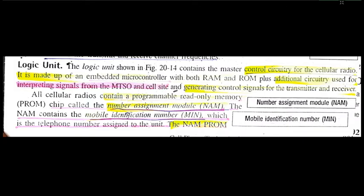The next portion is the logic unit. The logic unit basically contains the master control of the entire cellular radio or entire cell phone. You can say it is the heart of the cell phone. It is made up of a microcontroller with RAM and ROM together, plus additional circuitry which interprets signals from the MTSO and the cell site, and generates control signals for the transmitter and receiver.